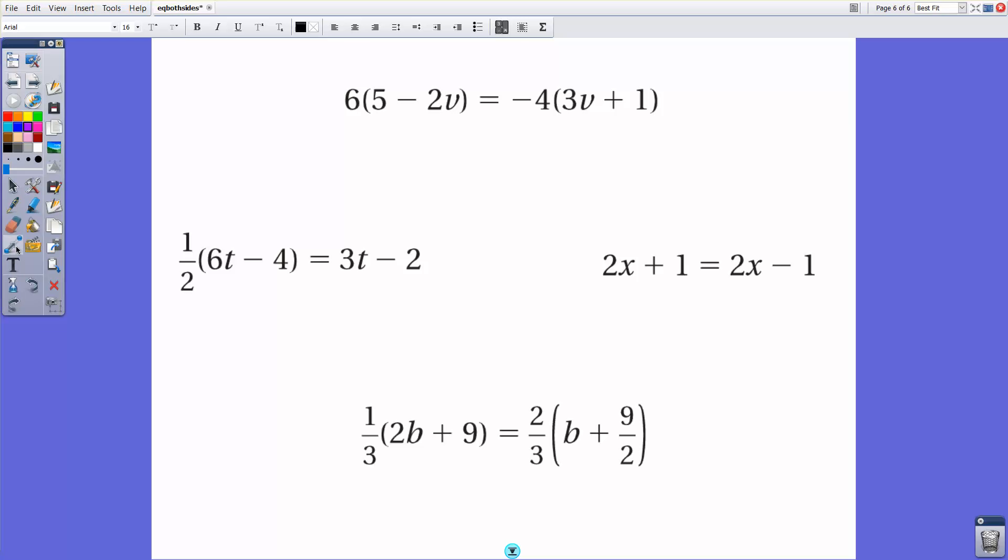In this case, we're going to do the same thing. We're going to do some distribution. So we have v's inside grouping symbols here. The left side here is going to be 30 minus 12v. And that will equal negative 12v minus 4.